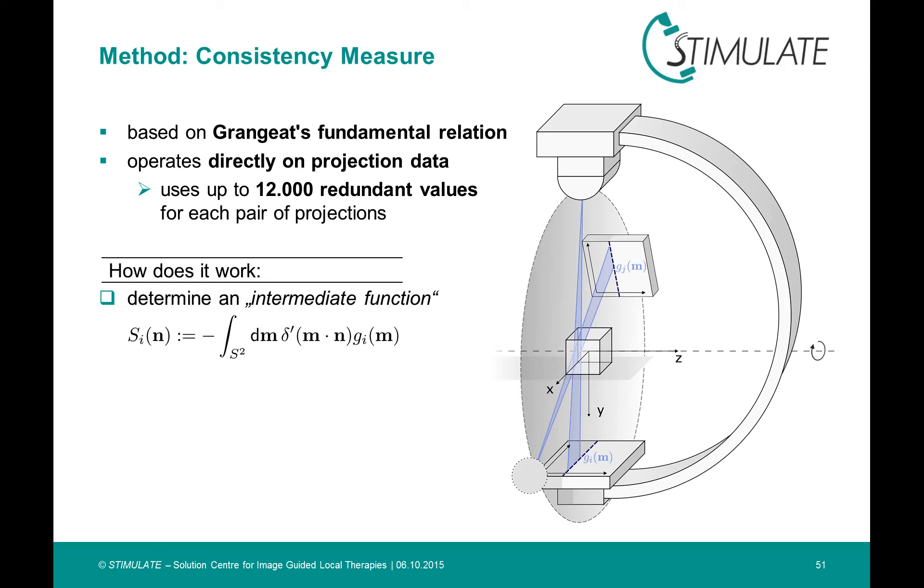Here, delta prime denotes the derivative of the Dirac delta function and Gi the i-th projection, where the vector m declares the direction of the rays.